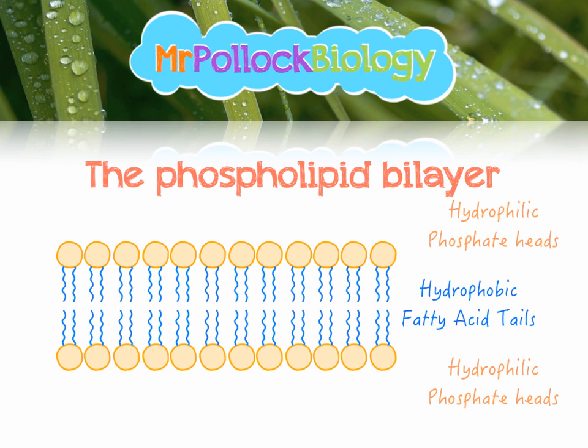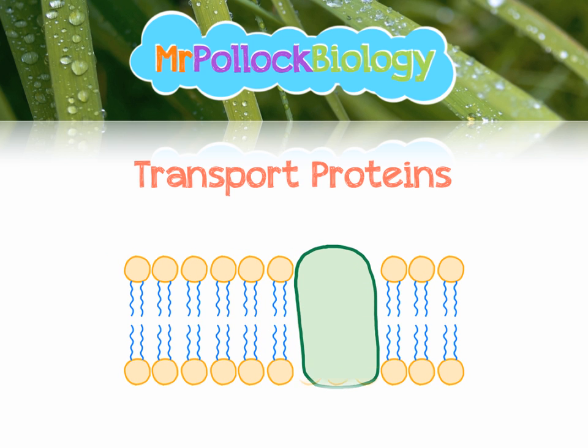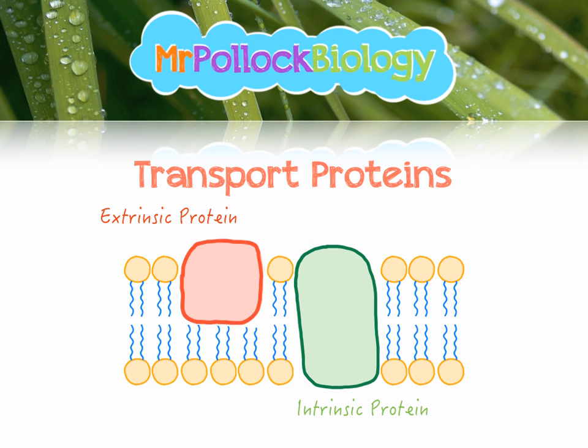That's not the only thing in the cell membrane — we've also got some other components. We've got transport proteins, or carrier proteins. Here is an intrinsic protein — an intrinsic protein is one that spans the entire bilayer from the outside of the cell to the inside. We also have extrinsic proteins, which go sort of halfway. The intrinsic proteins are involved in transporting stuff from one side of the membrane to the other, and this is how the cell can be selectively permeable, as these protein channels are specific to certain substrates.